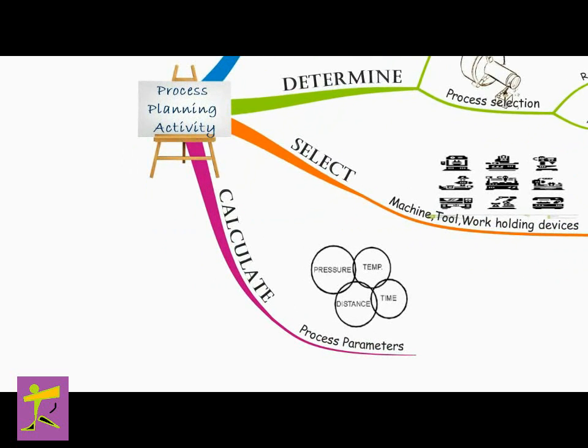Calculating process parameters, that is selecting process parameters: After an appropriate set of machines is selected, the next step in process planning is to calculate the specific operation setup times and cycle times on each machine. The determination of setup times requires knowledge of available tooling and the sequence of steps necessary to prepare the machine for processing the given work piece. The calculation of part processing time requires the determination of the sequence of processing steps on each machine. This activity is often called cut planning.